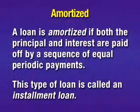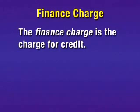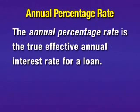Let's begin by looking at a few definitions. A loan is amortized if both the principal and interest are paid off by a sequence of equal periodic payments. This type of loan is called an installment loan. The finance charge is the charge for credit. The nominal rate is the interest rate that is stated. The annual percentage rate is the true effective annual interest rate for a loan.